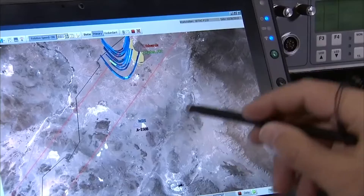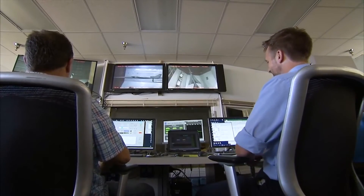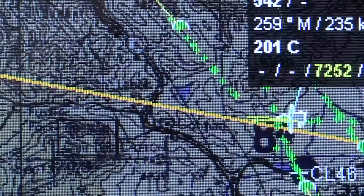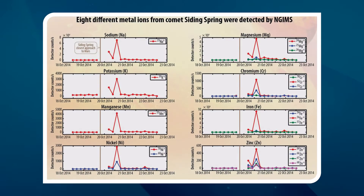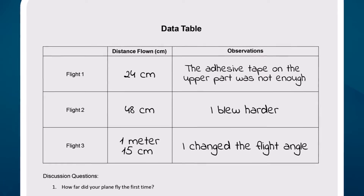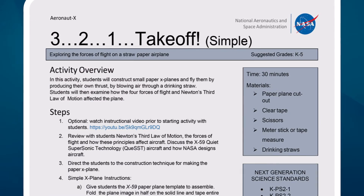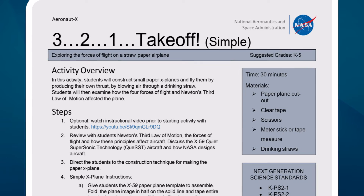Remember that when we carry out scientific research, information that needs to be analyzed is generated with the purpose of obtaining a result. For this, scientists and engineers use data analysis and interpretation and tools such as tables, graphics, and statistical analysis. Now I invite you to perform the activity 3-2-1 Takeoff. You can ask an adult to help you — you will need the guide to the 3-2-1 Takeoff simple version.